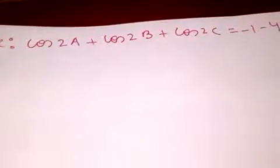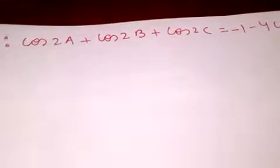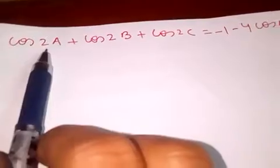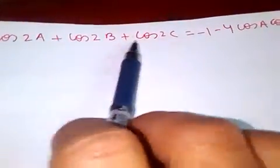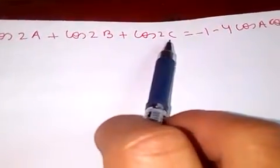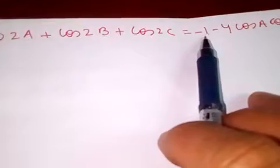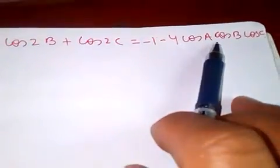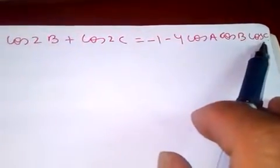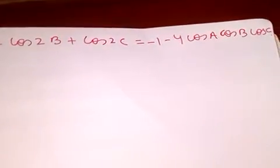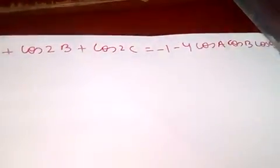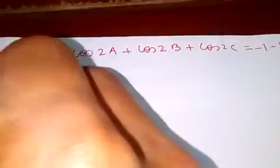Hi friends, today let's prove that cos2A + cos2B + cos2C is equal to minus one minus four cosA cosB cosC. So let's prove this.